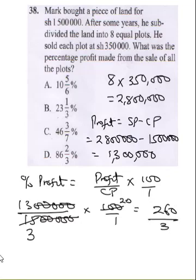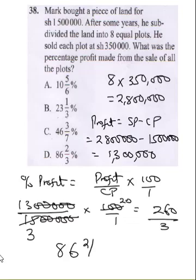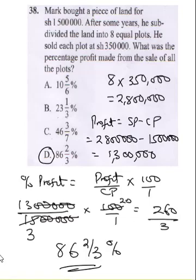When you do 3 into 260, you get 86 remainder 2, and 3 into 20 gives the remainder. So that will be 86 and 2/3 percent. Final answer. The correct answer here is D.